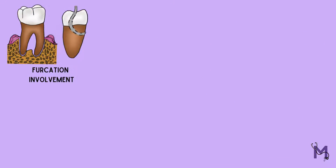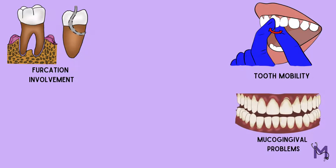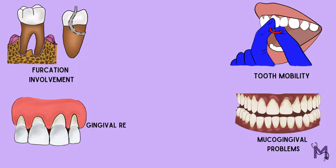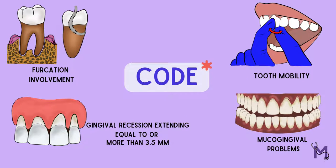Now, in cases where there is furcation involvement, tooth mobility, muco-gingival problems, or even gingival recession extending to the colored band of the probe — which is equal to or more than 3.5 mm — in any particular sextant, a code asterisk is given along with the score for that specific sextant.